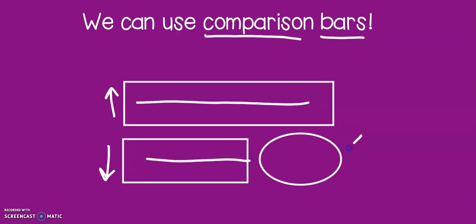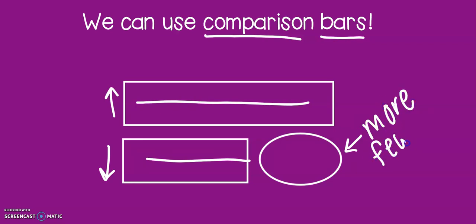The circle is a very special part of the comparison bar. This circle is only used if a number is attached to the words 'more' or 'fewer.' That is the only time a number goes in the circle. We're going to be practicing a few problems to hopefully help in understanding how to use comparison bars.